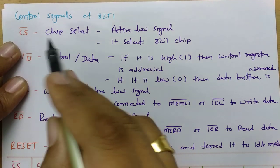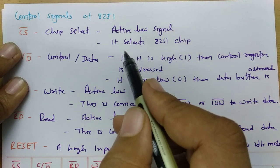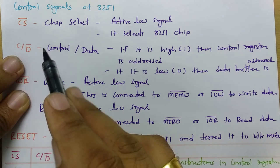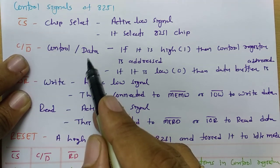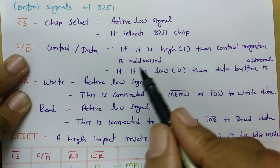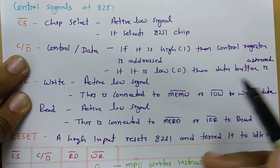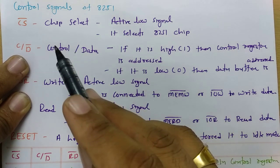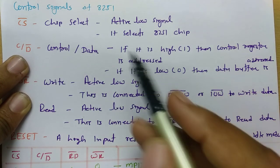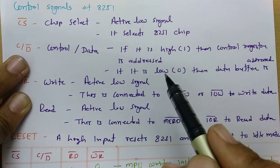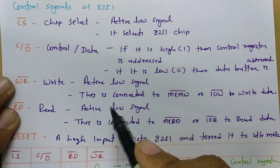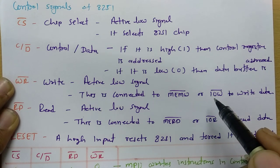The first control signal is Chip Select — if it is active low, the 8251 chip gets selected. There is another control signal C/D bar, where C stands for Control and D stands for Data. If it is active high, the control register is addressed; if active low, the data bus buffer is addressed. Control is 1, data is 0 — for control it selects the control register, for data it selects the data bus buffer.